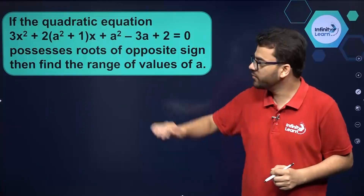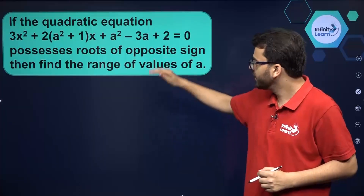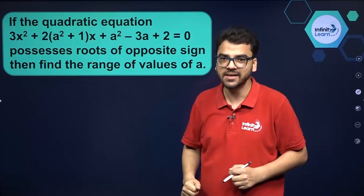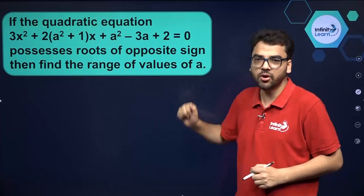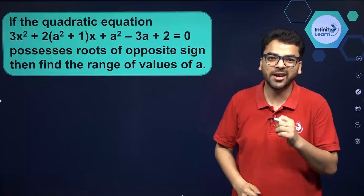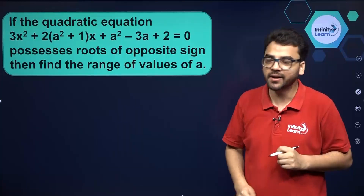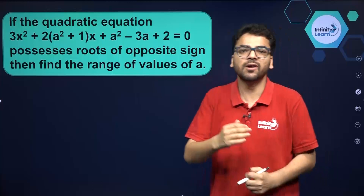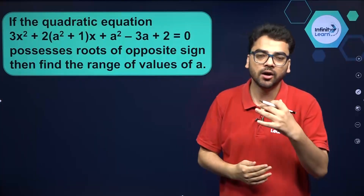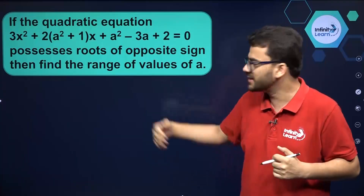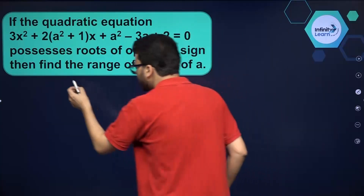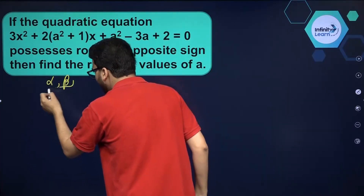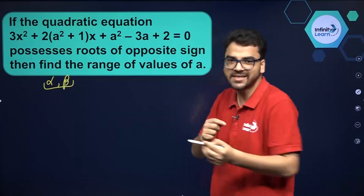Hello everybody. We have a quadratic equation in which it is given that the roots are of opposite signs, and we have to find the range of values of A. So let's start. It is given that the roots are of opposite signs. If you are thinking of taking the sum of the roots, suppose the roots are alpha and beta — and don't forget that they are of opposite signs.